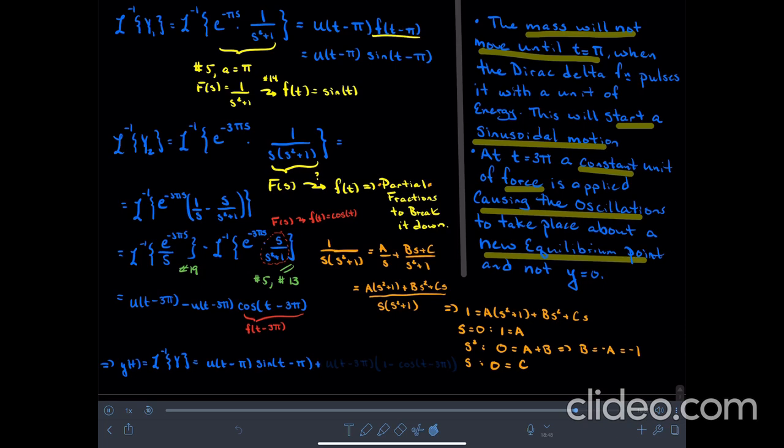And then I add to that the Laplace transform of the second term, the inverse Laplace transform. So there's a u of t minus 3 pi, all of this multiplying 1 minus cosine of t minus 3 pi.